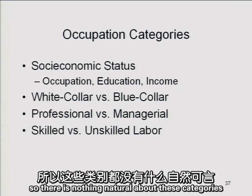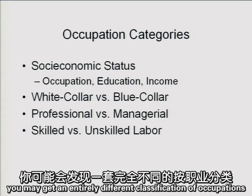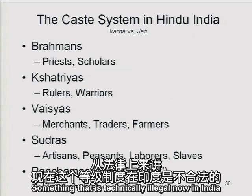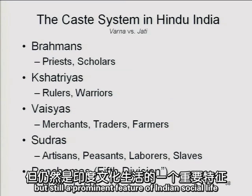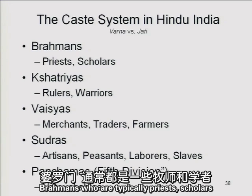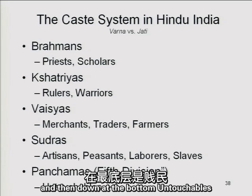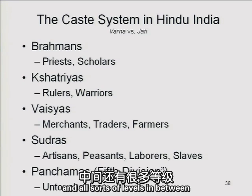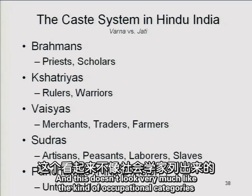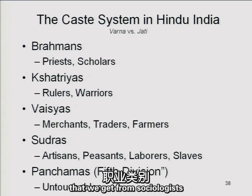There's nothing natural about these categories. If you move to another culture, you might get an entirely different classification of occupations. A good example is the caste system in Hindu India — technically illegal now but still a prominent feature of Indian social life — where at the upper end you have Brahmins who are typically priests and scholars, and down at the bottom, untouchables, with all sorts of levels in between. This doesn't look very much like the occupational categories we get from sociologists.